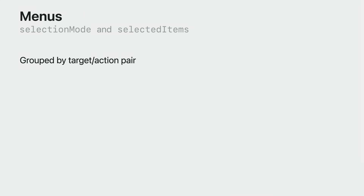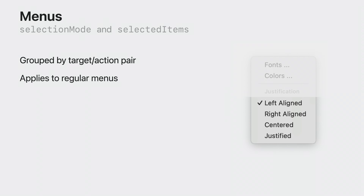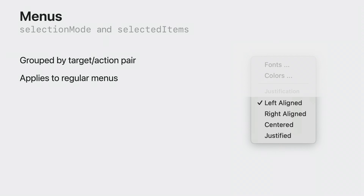When manually creating palette menu items, give each item the same target-action pair to take advantage of the new selection mode and selectedItems behavior. And here's a tip: this technique is not limited to palette menus — it also works for menu items that have the same target-action pair in regular menus.